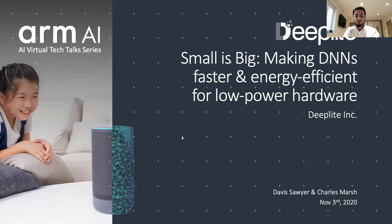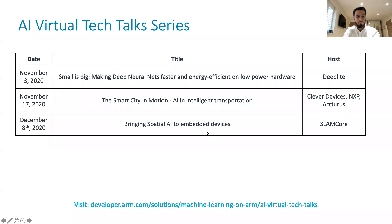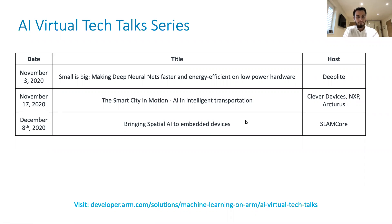Before we get cracking, we've got a couple more tech talks before we close out the year. On November 17th, we're really excited to be hosting a suite of companies talking about the Smart City, which is going to be really interesting. And we've also got a December talk from Slamcore, who are going to be talking about spatial AI in embedded devices and actually showing off a robot demo.